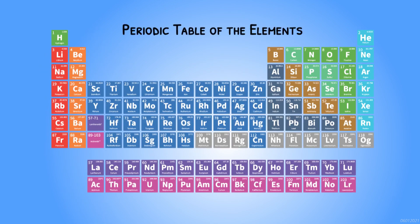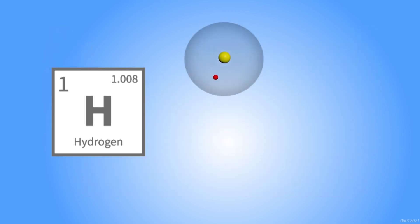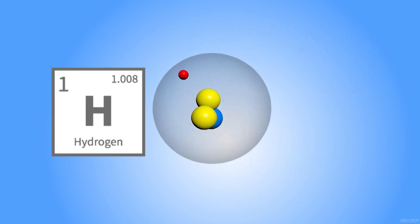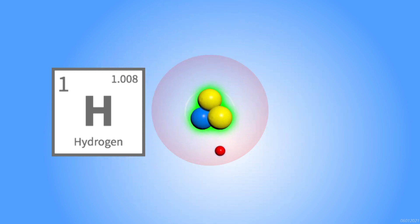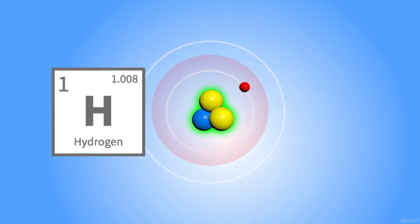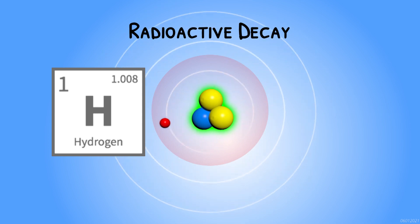Do you remember the periodic table? Every element listed in it has a specific number of protons and neutrons. Sometimes an atom can have too many or too few protons or neutrons. Let's take a look at the isotopes of a hydrogen atom. Hydrogen 1 and 2 is stable and hydrogen 3 is unstable. In this state, the atom becomes unstable, or what we call radioactive. Radioactive atoms would naturally want to return to their balanced or stable state. The atom's nucleus does this by releasing energy. The excess energy may be released by the nucleus as a form of radiation. The process of releasing this energy is called radioactive decay.